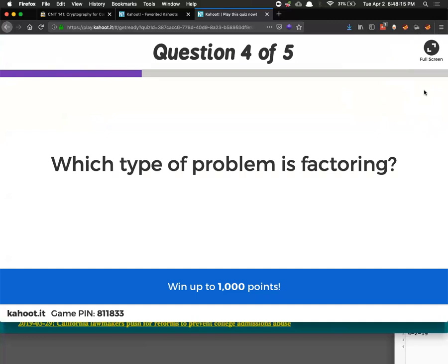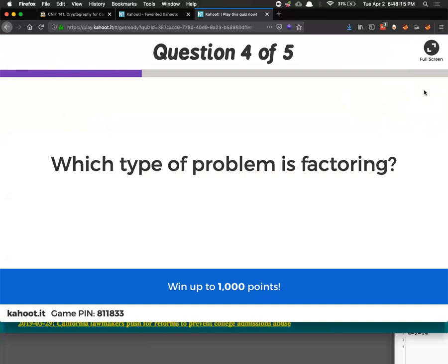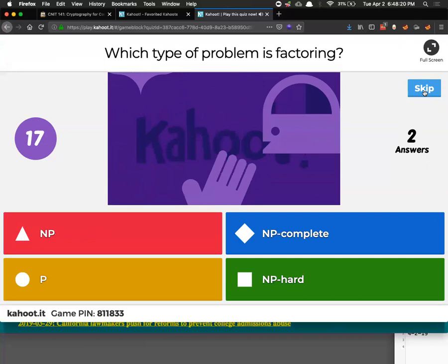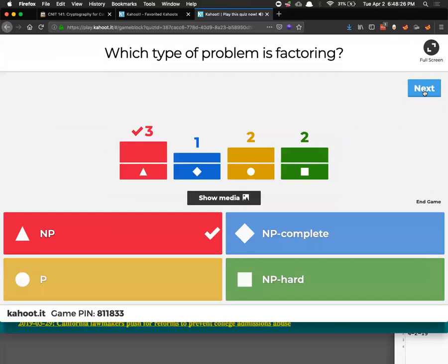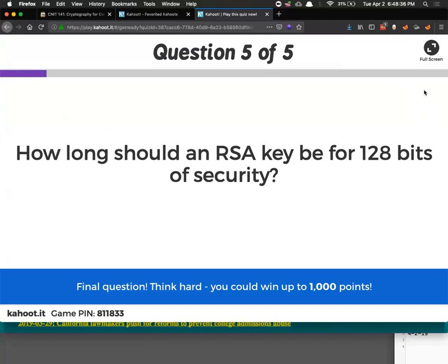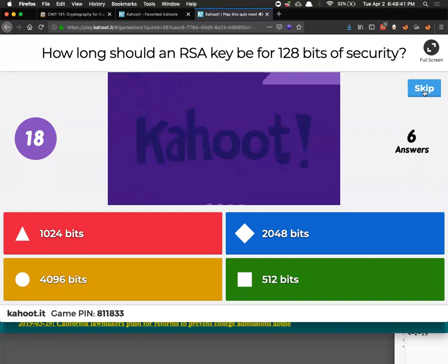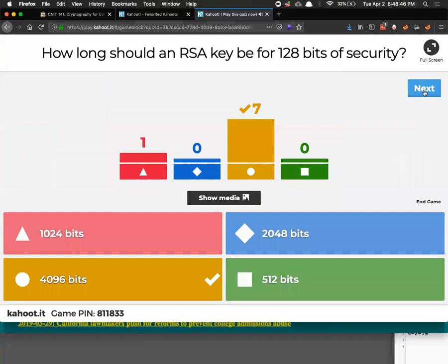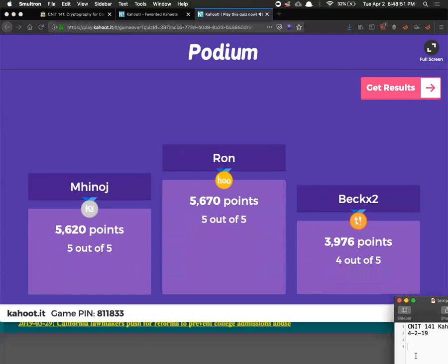All right. How about factoring? What category is that in? It's in NP, but it's not NP-complete or NP-hard, which is one of the many disturbing things about it. But that's the way it is. All right. How long should your RSA key be? The public key, of course. That's it. These days, 4096 is what you need. Okay. Good.